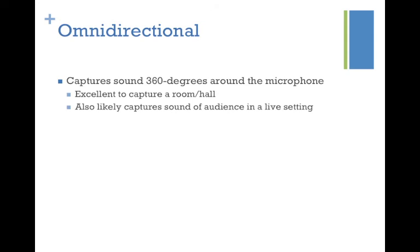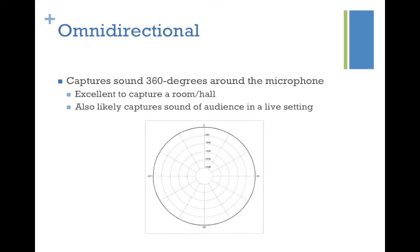Omni-directional captures sound 360 degrees around the microphone. It's excellent for capturing a room or hall because it literally gets everything around it, and also captures audience sound in a live setting. In a studio situation, you might call it the 'room mic' — it captures the room and everyone in it roughly equally. You can then mix those close-up microphone tracks with the omni-directional room mic track as well. It's literally a circle — it captures everything around it equally, all 360 degrees.